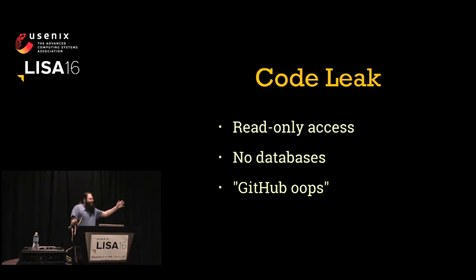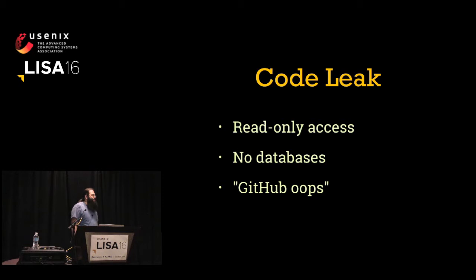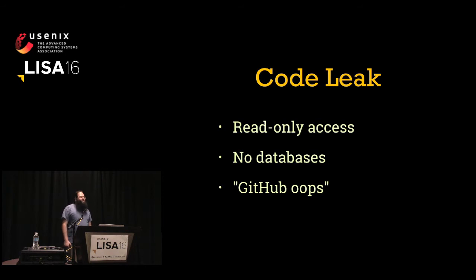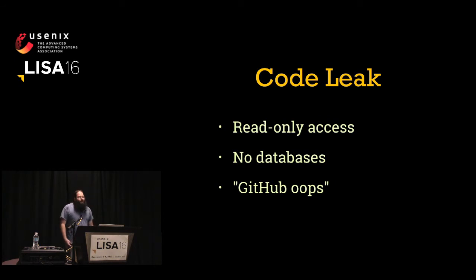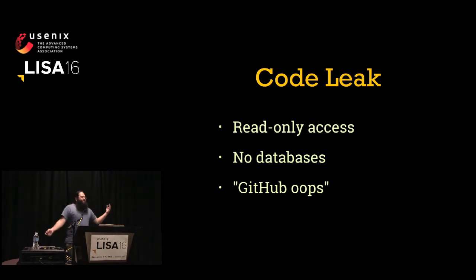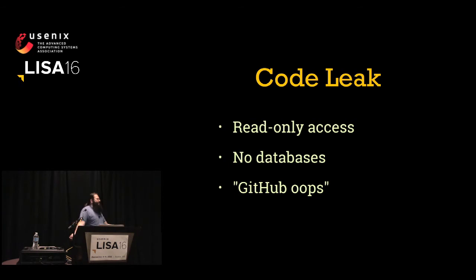A code leak can happen subtly over time, usually through incorrectly configured error pages, or occasionally you'll get a GitHub oops where someone pushes to the wrong repository. Fortunately, this shouldn't be a big deal if we all know we shouldn't be hard-coding passwords into our source files. Somebody having access to our source code might be bad for the business, but hopefully not a security issue if secrets aren't there.